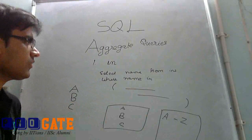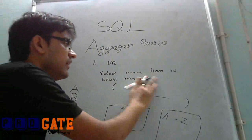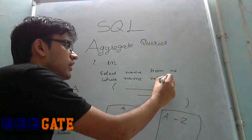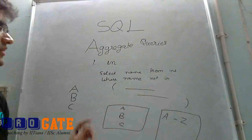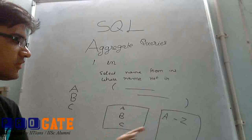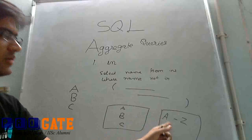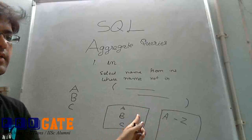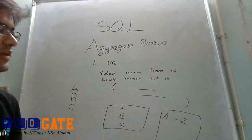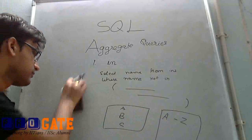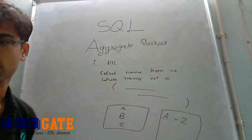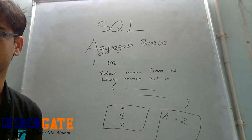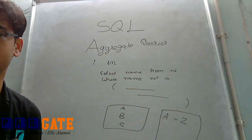Similarly, we have NOT IN. In this case it checks if the value is present in the result of the subquery — if it is not present in the result, only then is it given as the output.